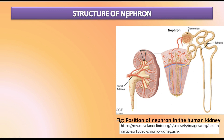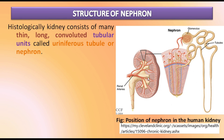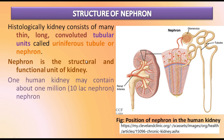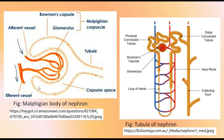The nephron is the functional unit of the kidneys. Histologically, the kidney consists of many thin, long, convoluted tubular units called uriniferous tubules or nephrons. Each human kidney may contain about 1 million nephrons. Nephrons are made up of two parts: the Malpighian body and a tubule. The Malpighian body contains the Malpighian corpuscle, which is again made up of two parts: the Bowman's capsule, a cup-like structure, and the glomerulus.